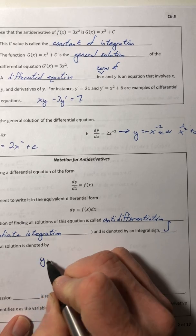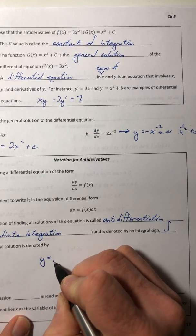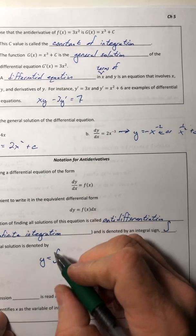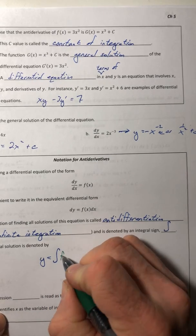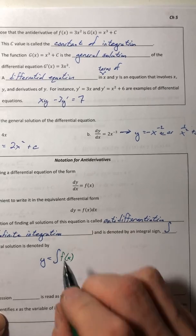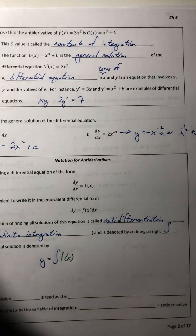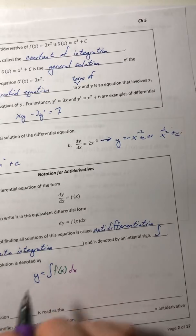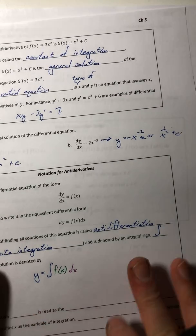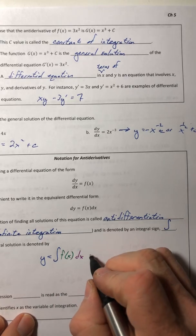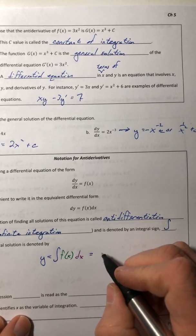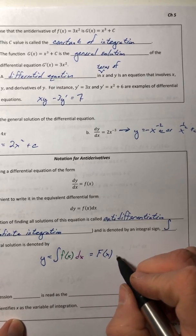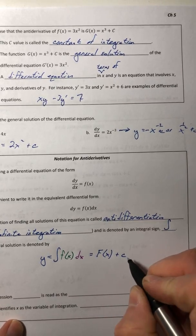And the general solution is denoted by this. So we have y equals, we're going to put our integration symbol. And inside of there, you have some sort of a function. And that will equal capital F of x plus c.